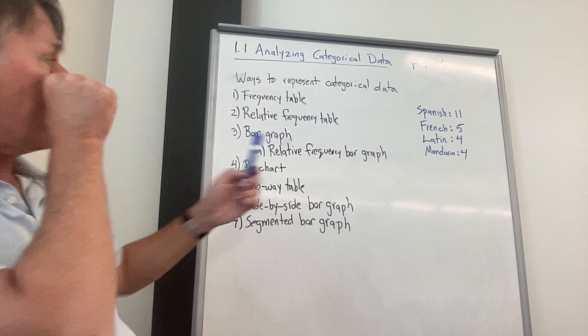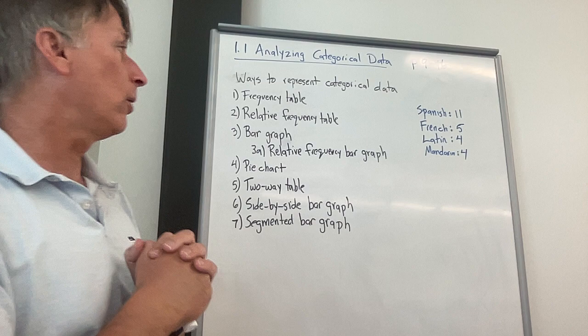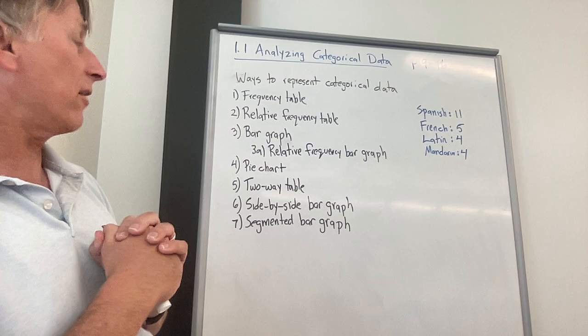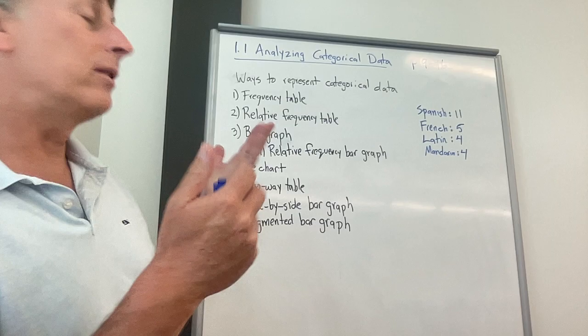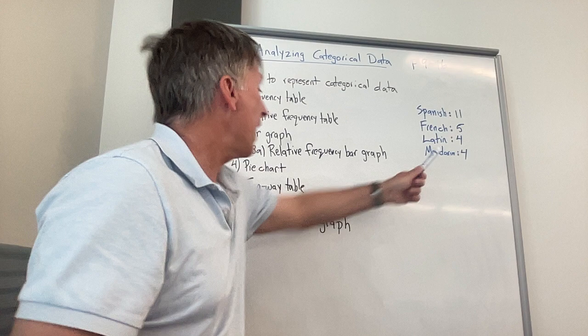So the first thing is when you look at these numbers, we recognize that it's categorical data because Spanish, French, Latin, and Mandarin are values of some categorical variable, which would be language or world language class taken. One interesting thing is I listed them in this order from kind of biggest to smallest, but the order is totally arbitrary. I could have listed French first. I could have listed Latin first. There's no logical reason why I put those four languages in that order.